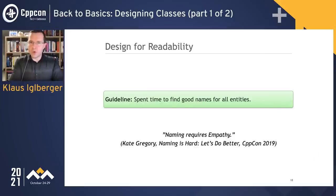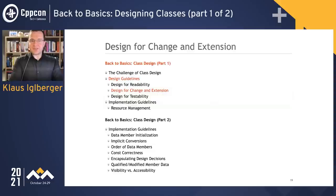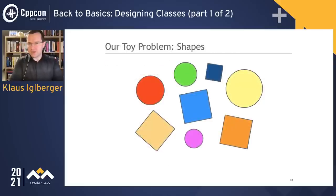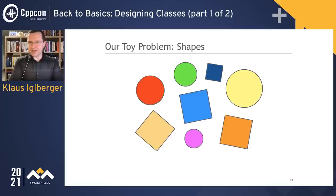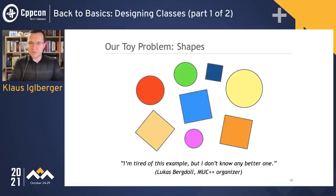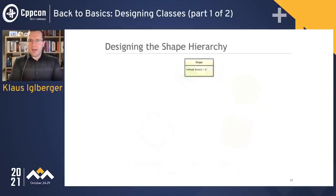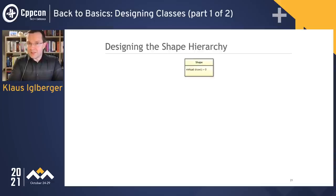Spend time to find good names for all entities — it's definitely very, very important. Now let's design for change and extension with a toy problem: shapes. I know this is one of those situations where people usually drop off because it's boring — the example is not particularly inspired. As one of our fellow C++ organizers said, 'I'm tired of this example, but I don't know any better one.' I'm sticking with it because it's simple. I'm starting to design some kind of shape hierarchy, which is what many people do, and what we end up with in my training classes.